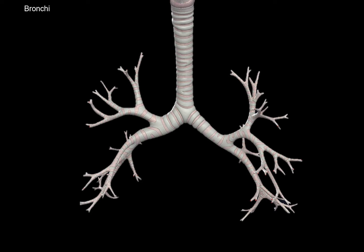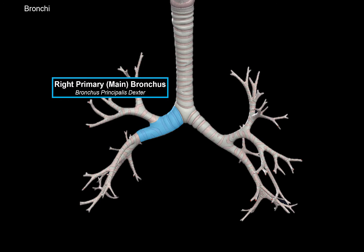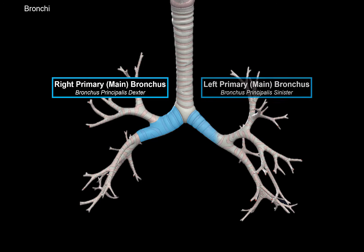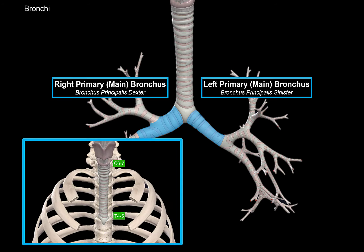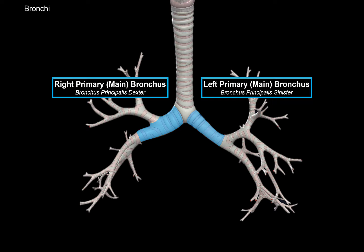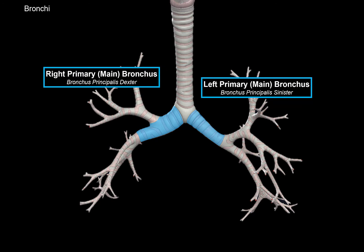Now let's do the anatomy of the bronchi. As the trachea splits into 2 bronchi, we get the right primary bronchus, or the right main bronchus, and the left primary bronchus. They split at the region of the 4th–5th thoracic vertebrae, where the trachea ends. The right primary bronchus is about 2.5 cm long before it enters the lungs — shorter, wider, and more vertical than the left one. The left one is about 5 cm long before it enters the lungs, so it's longer and more narrow.